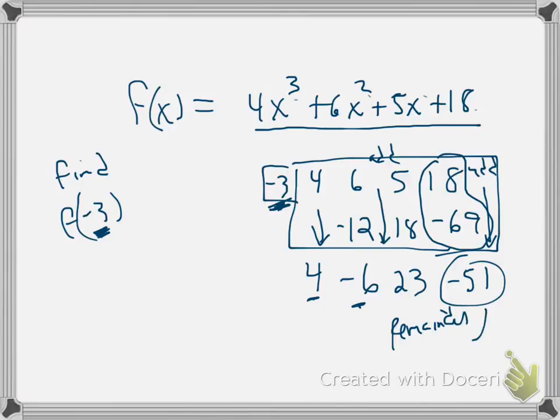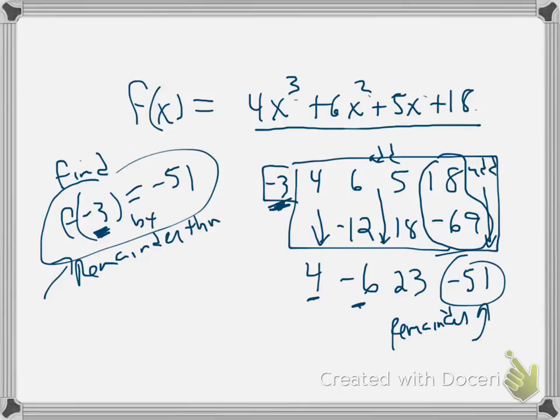So note to self, the remainder of the synthetic division is f of negative 3. And you say, no way, I don't believe it. Well, by the remainder theorem, that's what the remainder theorem tells us. But don't trust it.